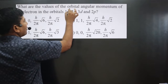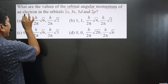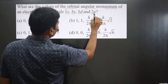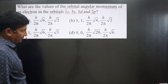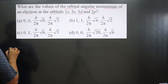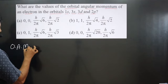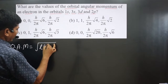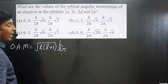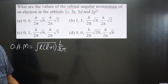The question asks: what are the values of orbital angular momentum of an electron in the orbitals 1s, 3s, 3d, and 2p? We have the formula for orbital angular momentum: √(l(l+1)) × h/2π, where l is the azimuthal quantum number.